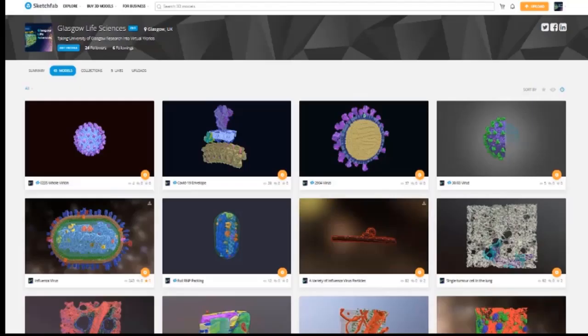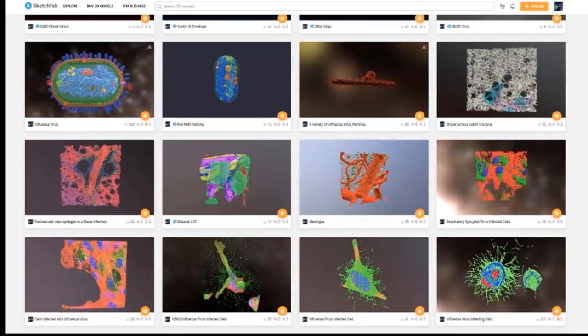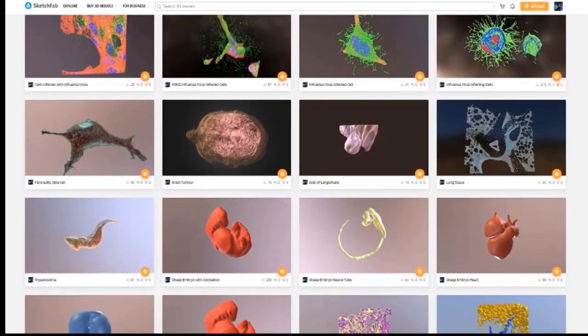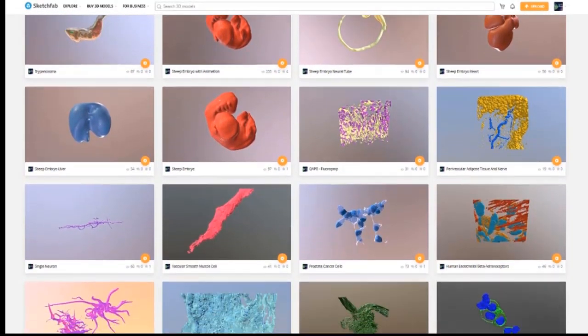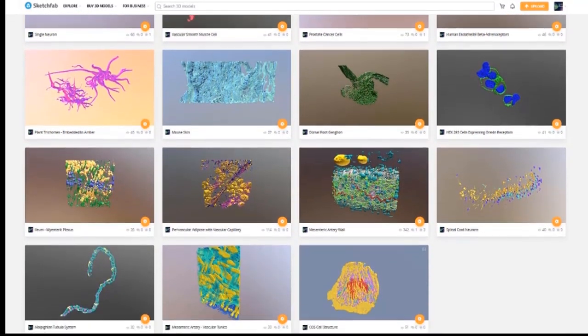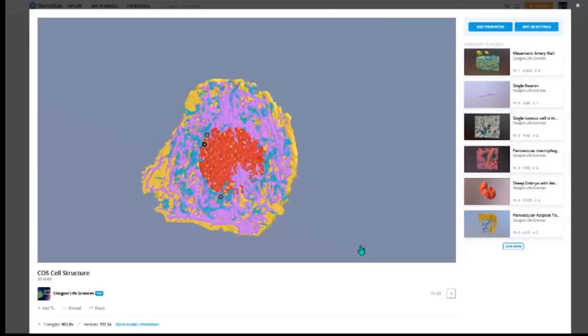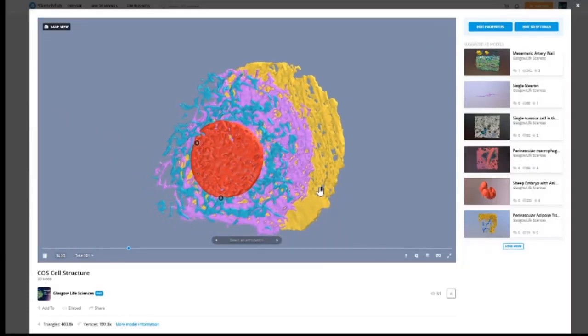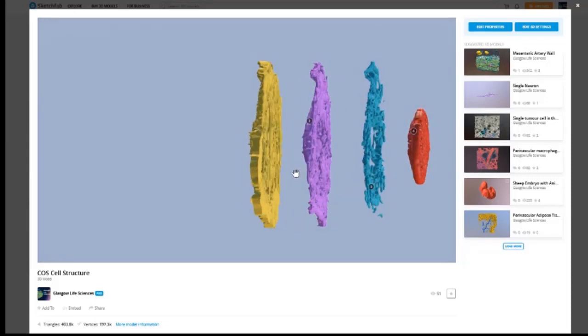Here we are in the Glasgow Life Sciences Sketchfab page. This is a collection of data that's been provided by researchers in the College of Veterinary and Life Sciences at University of Glasgow. Some of the data has been modeled in 3D animation packages, but most of it's captured using image scanning devices of one type or another. Here's that COS cell. It's been exported from 3D Slicer, trimmed in MeshLab, and then uploaded to Sketchfab, which is a fantastic way of making the 3D data available on a variety of web-enabled devices.